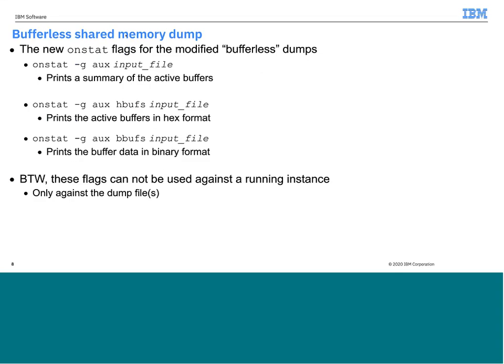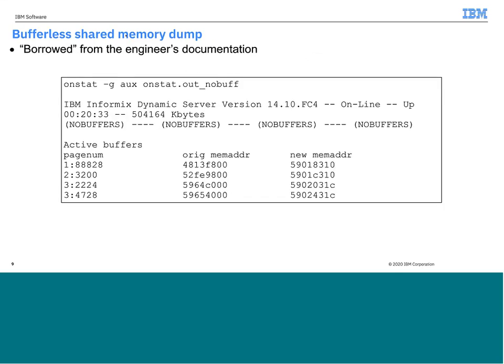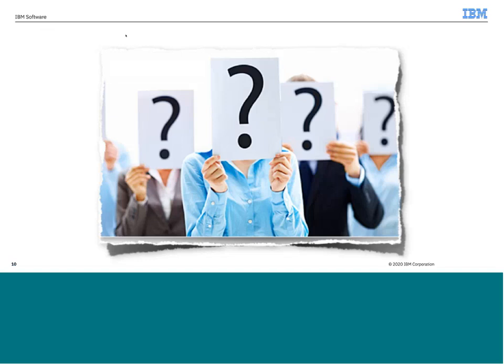The new onstat -g aux flag: you're going to have to pass it the shared memory dump file. If you do just an onstat -g aux, it's going to print a summary of the active buffers. If you use the H buffs flag, it's going to print it in hexadecimal format. If you do the B buffs, it's going to give it to you in binary format. Don't try and run these commands against a running instance — this is only going to work on a shared memory dump from a dead instance. That's the new shared memory semi-bufferless dump.